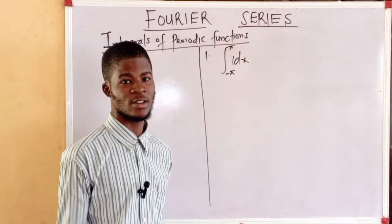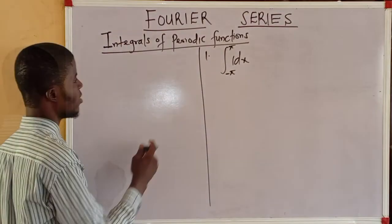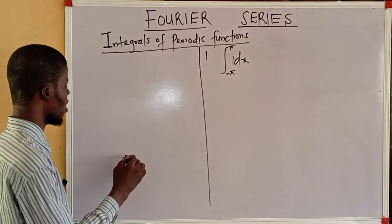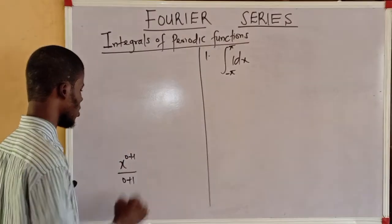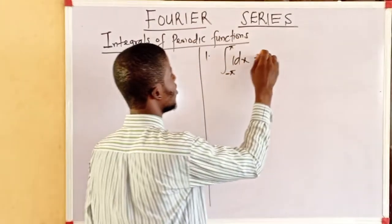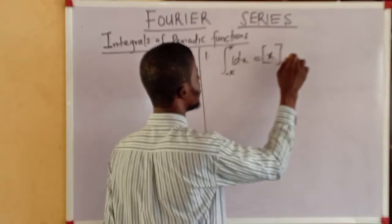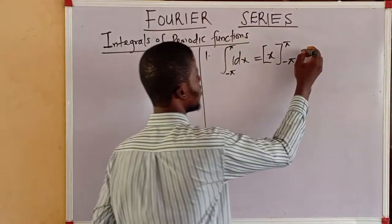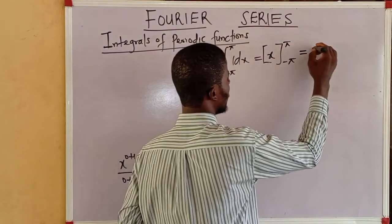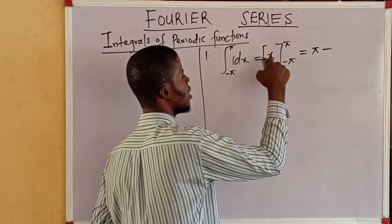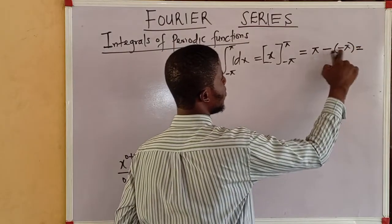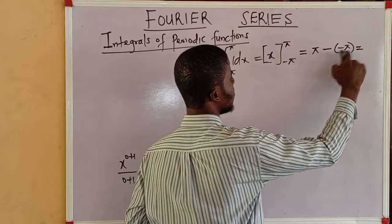The integral of dx is x. Remember the rule of integration: 1 can be written as x to the power of 0. The rule of integration says add 1 to the power and divide by the new power, so this is x to the power of 1 over 1, which is x. We are integrating from negative pi to pi. Plugging in the upper and lower limits: pi minus minus pi gives us pi plus pi, which is 2π.